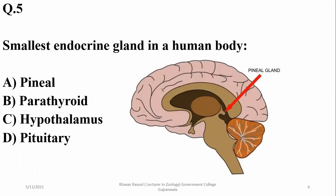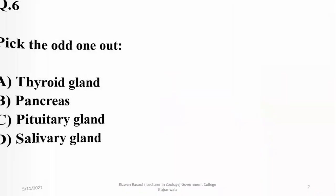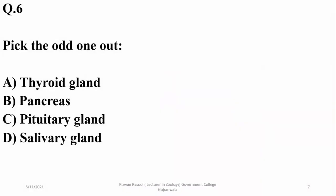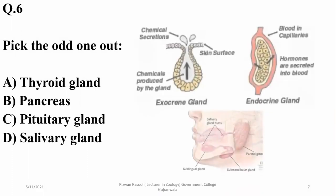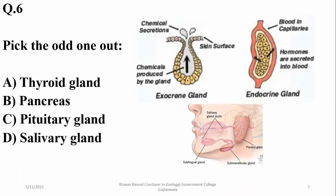The pineal gland is a pine cone-shaped gland present in the human brain — it is the smallest organ as well as the smallest endocrine gland in the human body. Pick the odd one out: the salivary gland is an exocrine gland while all others in the list are endocrine glands. So D is the answer.